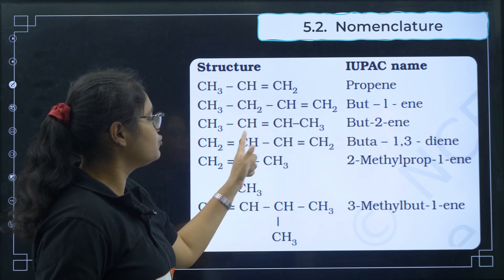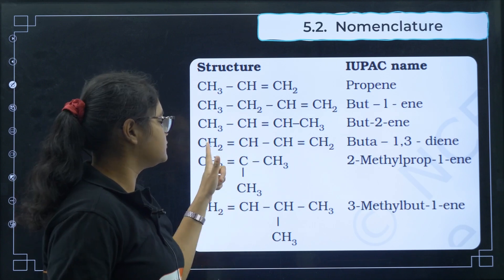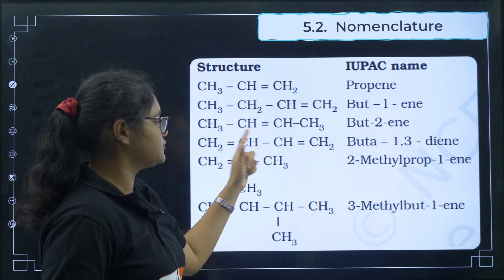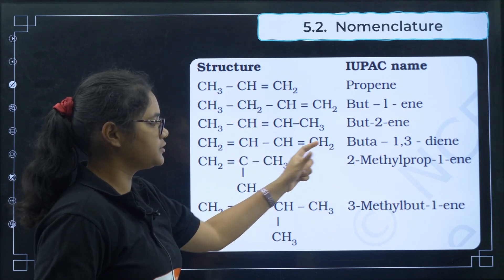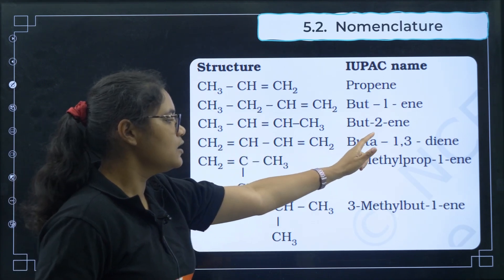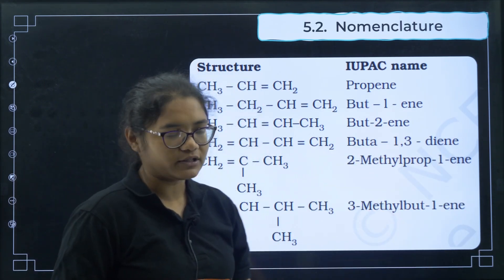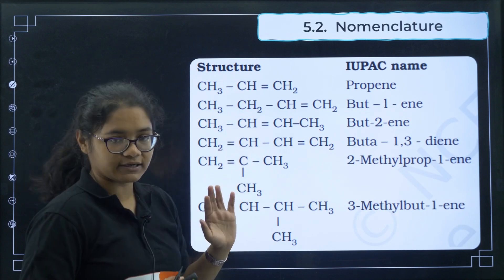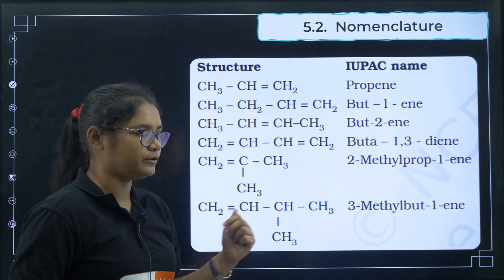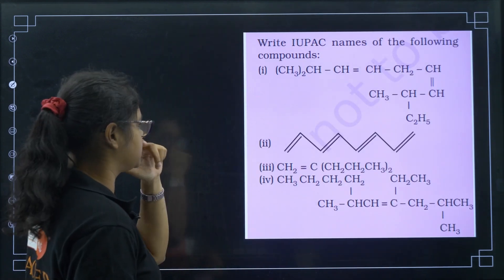If you have two double bonds, for example at positions 1 and 3, it is buta-1,3-diene. That is how nomenclature is done. We will now do some practice questions picked from NCERT.